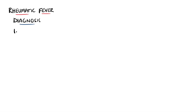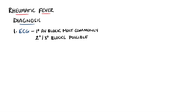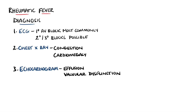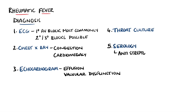Other investigations include an ECG looking for blocks — first degree being the most common, but second degree and third or complete heart block can also occur. A chest X-ray may show a congestive picture or cardiomegaly, which may be suggestive of pericardial effusion. An echocardiogram can then evaluate this effusion as well as any valvular abnormalities. A throat culture is also sent, but this is often negative, showing the post-infectious nature of this condition. Therefore, anti-streptolysin O and anti-deoxyribonuclease B antibodies may then be looked for.